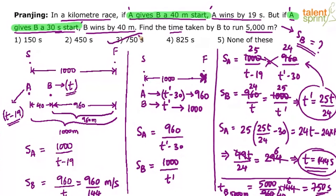This looks lengthy and time consuming, but that is how you deal with it. Not every question will have a shortcut. Some questions have to be solved using the regular method. When you do it yourself, you can cut down a lot of steps and just play with the equations. The answer is option 3, 750 seconds.